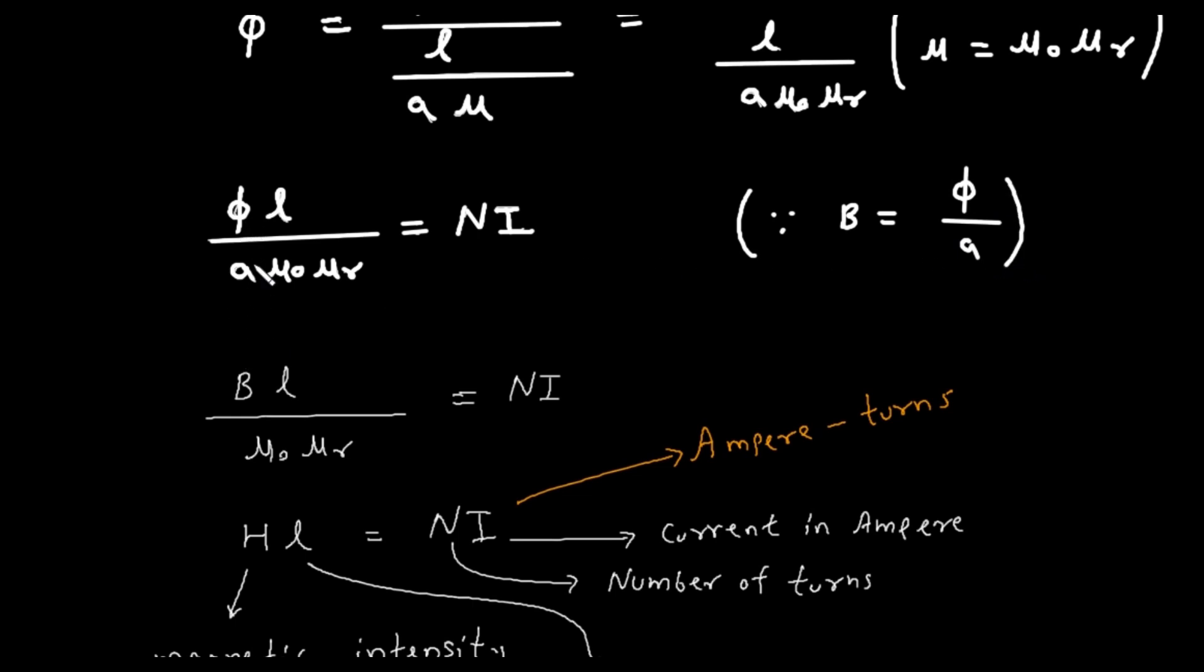So here this phi by a can be replaced by magnetic flux density b, and this l upon mu zero into mu r will remain as it is.